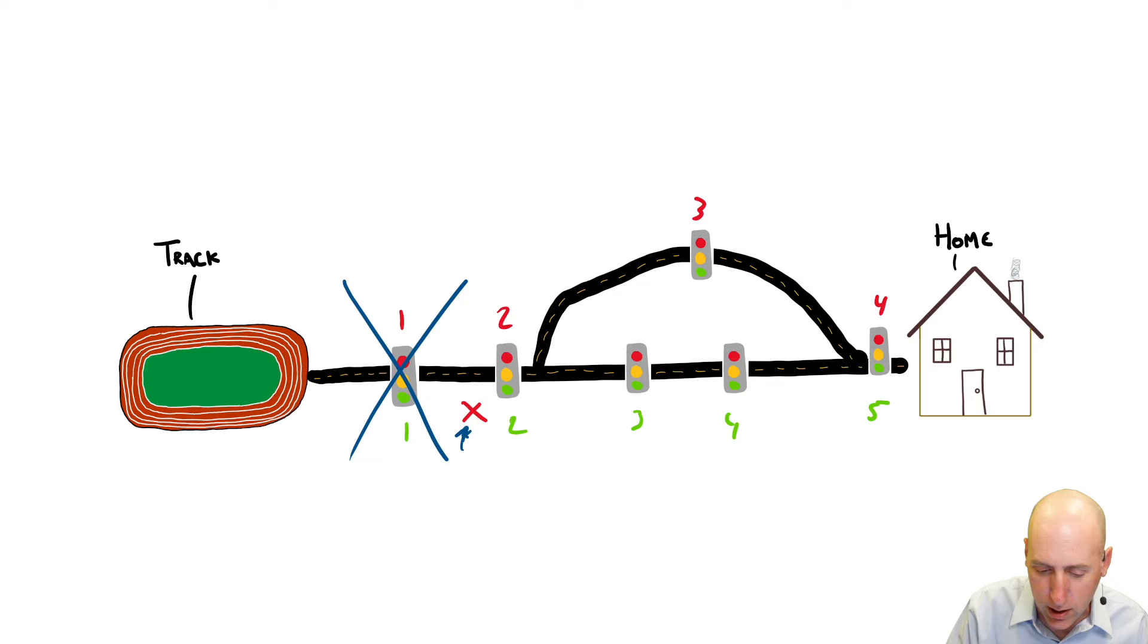But relevant cost for decisions actually goes a step further. It says listen, if there's no difference between the two routes, don't consider those either. And so what we need to do is actually don't even think about stoplight two because we're going through it either way. Either route takes you through stoplight two and either route takes you through this stoplight at the end, so don't think about that one either.